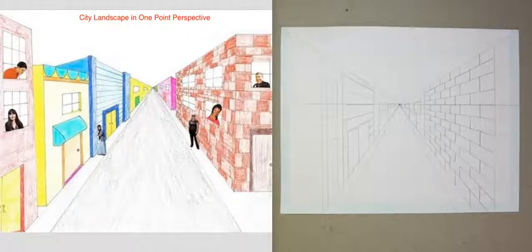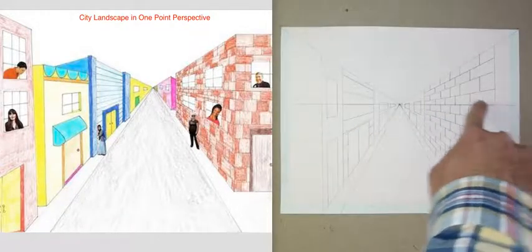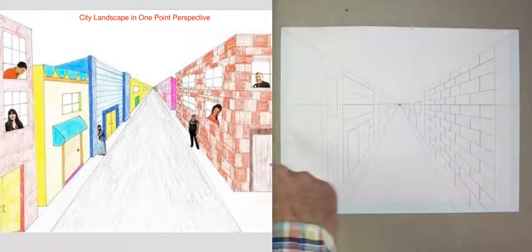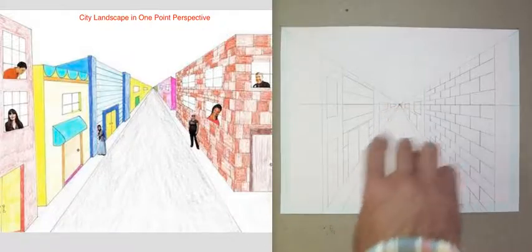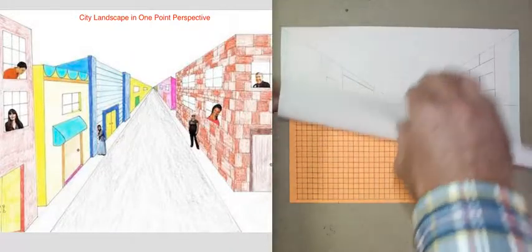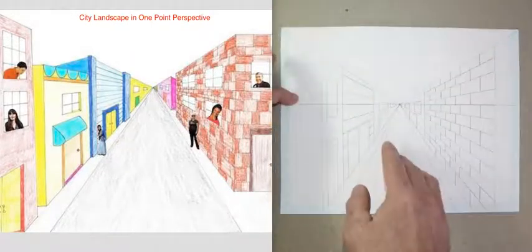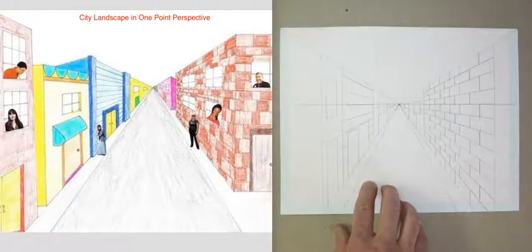We're going to continue our city landscape and one-point perspective drawing. Our drawing design is already set up — you can see where our horizon line runs through the middle of it, and we have a vanishing point right in the center. We have graph paper underneath so that it's easy for us to create vertical lines that are all parallel.